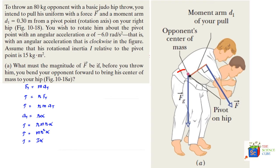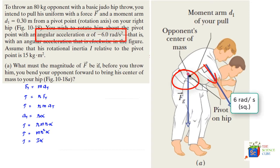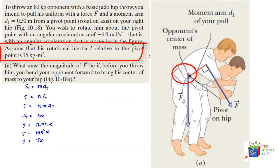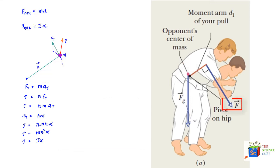You wish to rotate him about the pivot point with an angular acceleration of −6 rad/s², that is a clockwise angular acceleration. Assume the rotational inertia I relative to that point is 15 kg·m². What must the magnitude of force f be if, before you throw him, you bend your opponent forward to bring his center of mass to your hip?